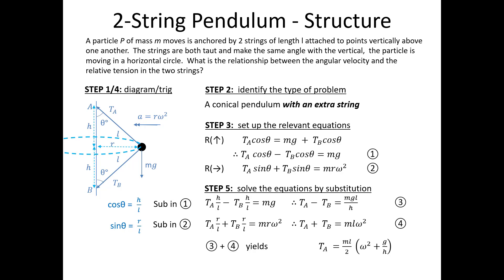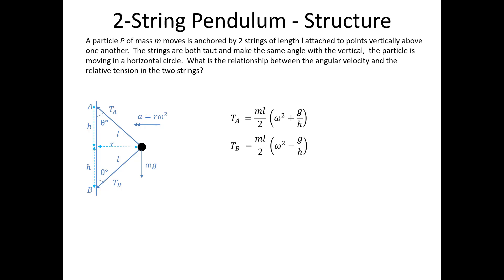Let's take a closer look at those two tension equations. Notice that they're of a very similar form, but TA has omega squared plus g over h in the brackets, and TB has omega squared minus g over h. This is consistent with what we expected. TA is going to be bigger than TB because all those values, g, h, and omega squared must be positive. What can we conclude from all this? First of all, TA is bigger than TB.